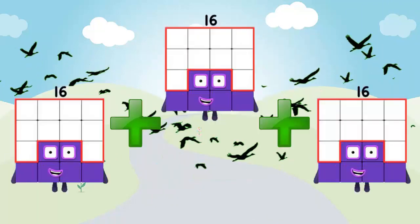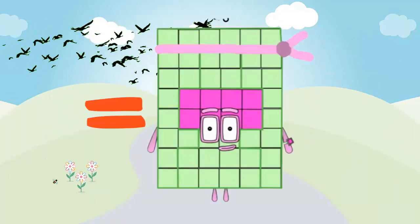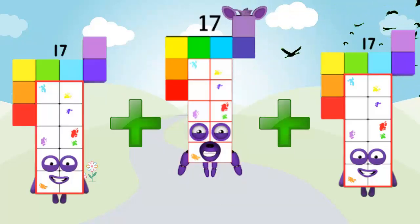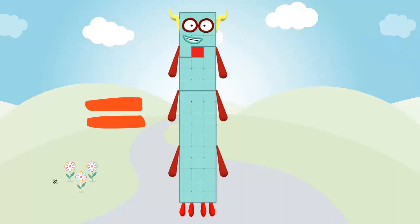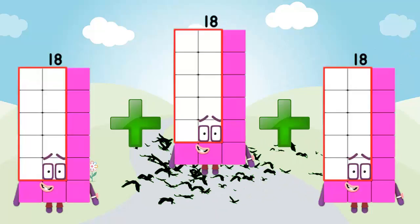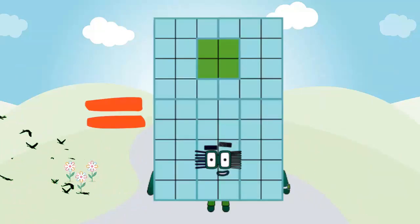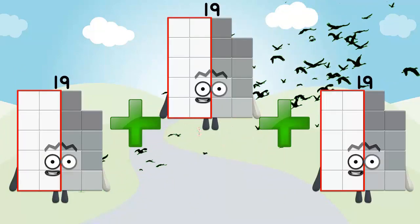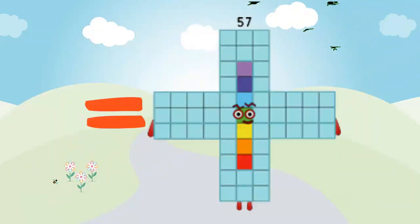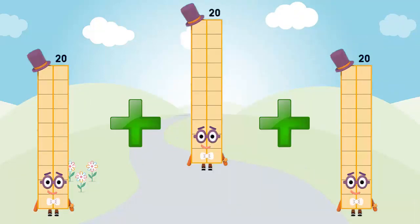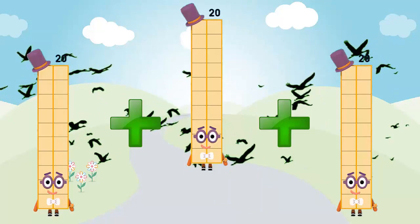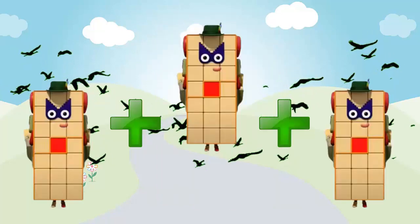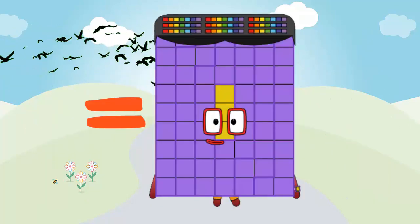16 plus 16 plus 16 equals 48. 17 plus 17 plus 17 equals 51. 18 plus 18 plus 18 equals 54. 19 plus 19 plus 19 equals 57. 20 plus 20 plus 20 equals 60. 21 plus 21 plus 21 equals 63.